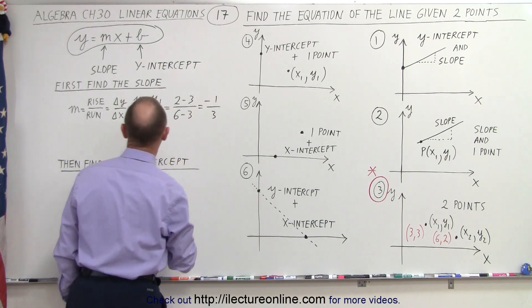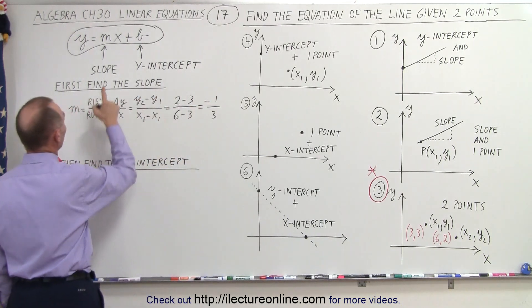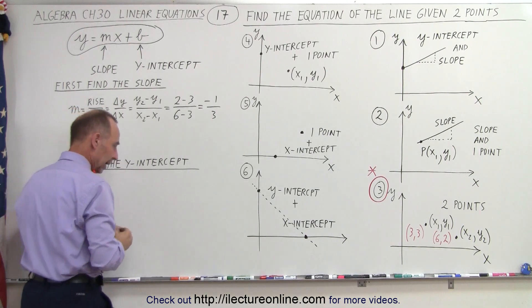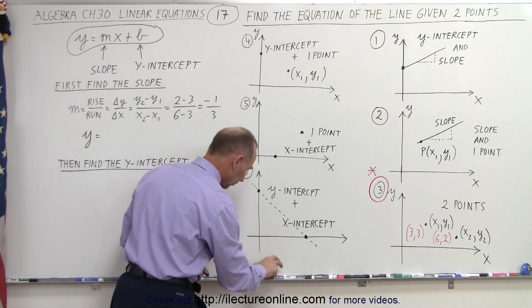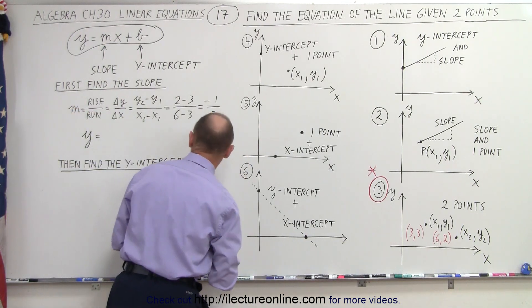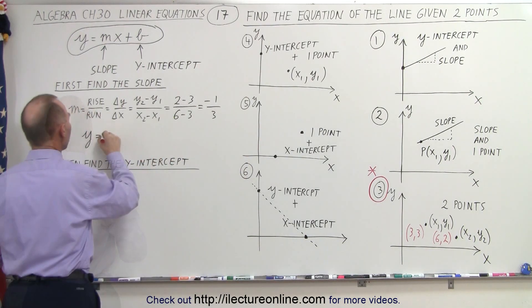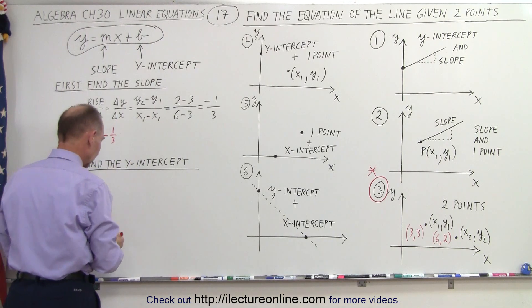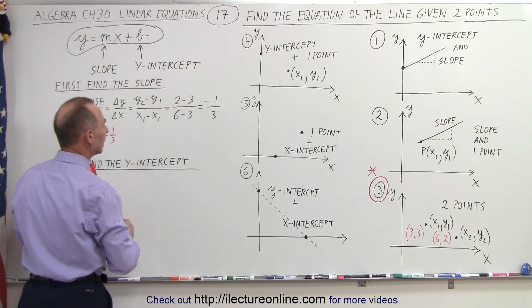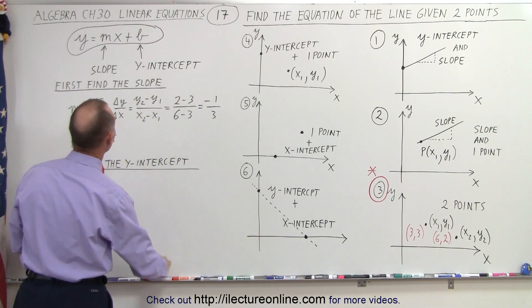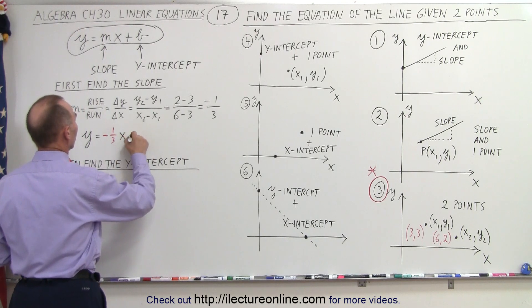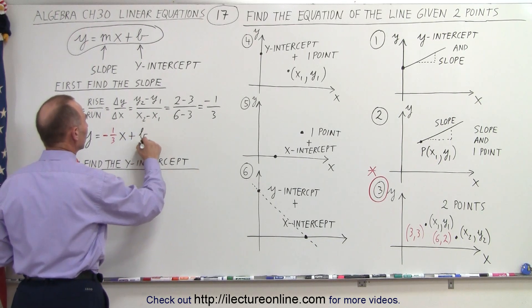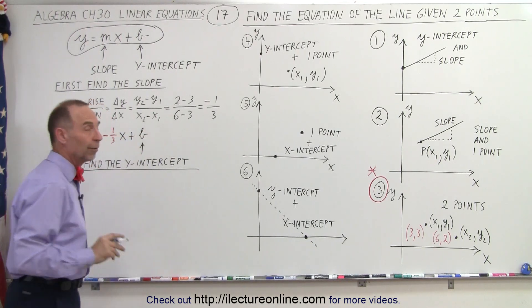So now we have the equation y is equal to minus 1 over 3 for the slope, times x, plus b. And now we need to find b.